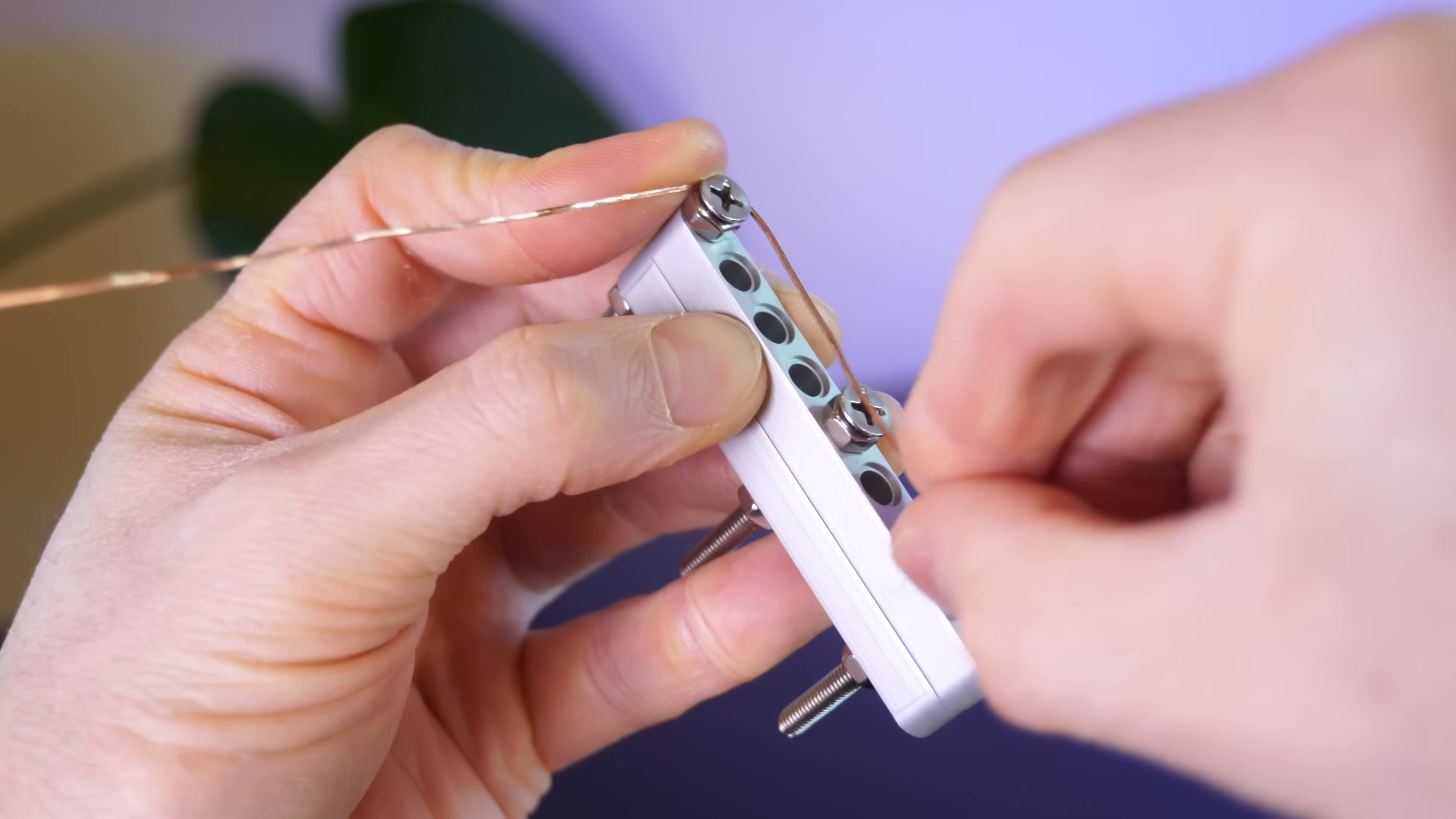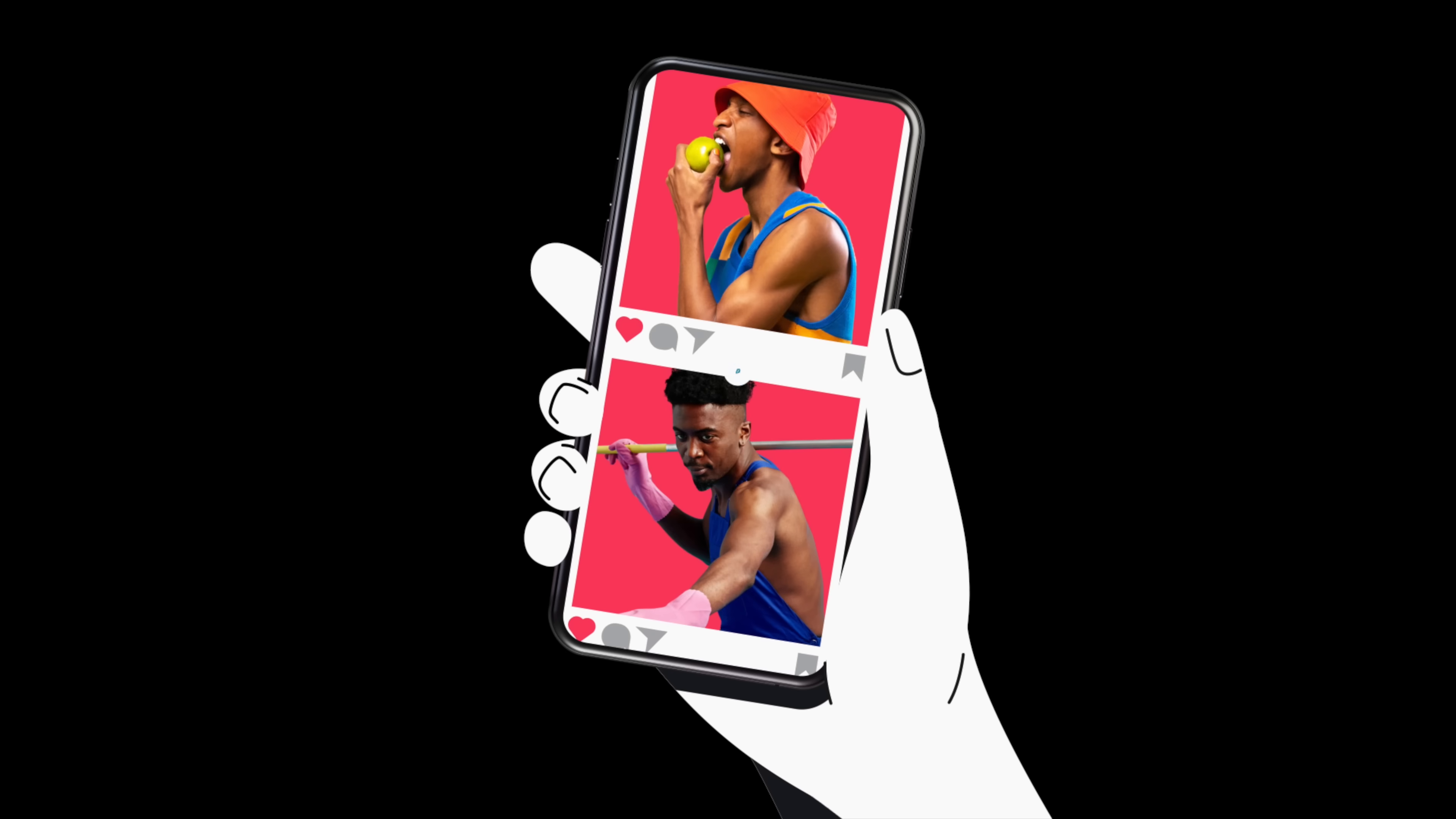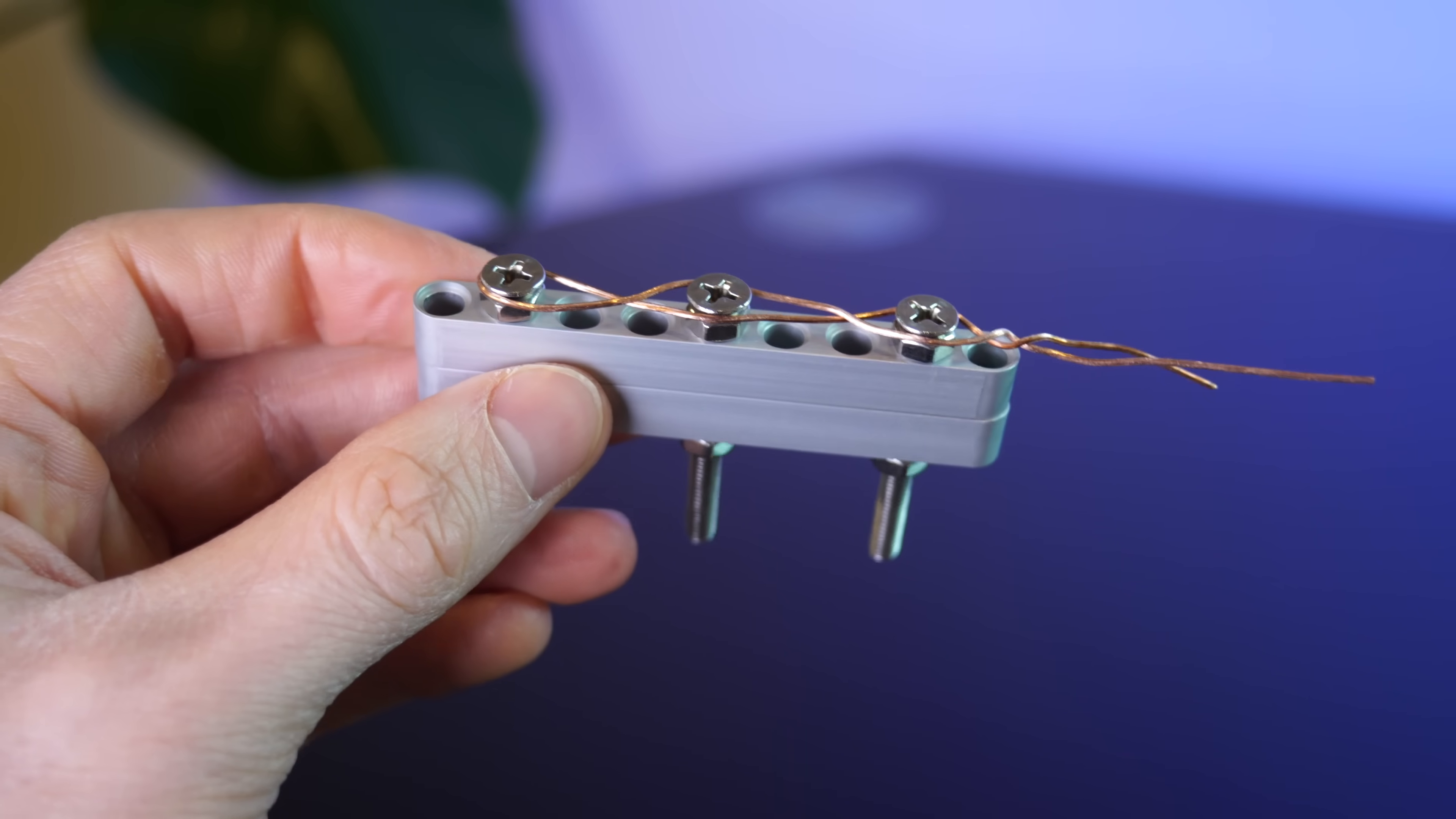And that's where Surfshark comes in. Just as I'm building this shield for my Lego, Surfshark is your shield for your online presence. Surfshark encrypts your connection, adding an extra layer of protection to shield you from prying eyes, just like these aluminum pieces protect my Lego.